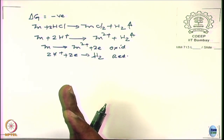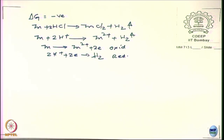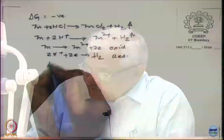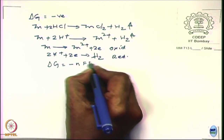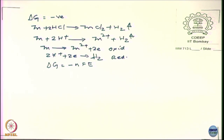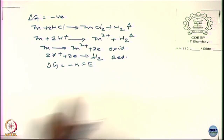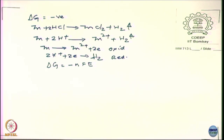We can separate this into: zinc going as Zn²⁺ plus 2 electrons — oxidation — and 2H⁺ plus 2 electrons giving hydrogen gas — reduction. Since this is an electrochemical process, we go for an electrochemical criterion. It is easy to measure the potential of an electrochemical system. How do you relate it to the free energy change? We use the Nernst relationship: delta G is equal to minus nFE.